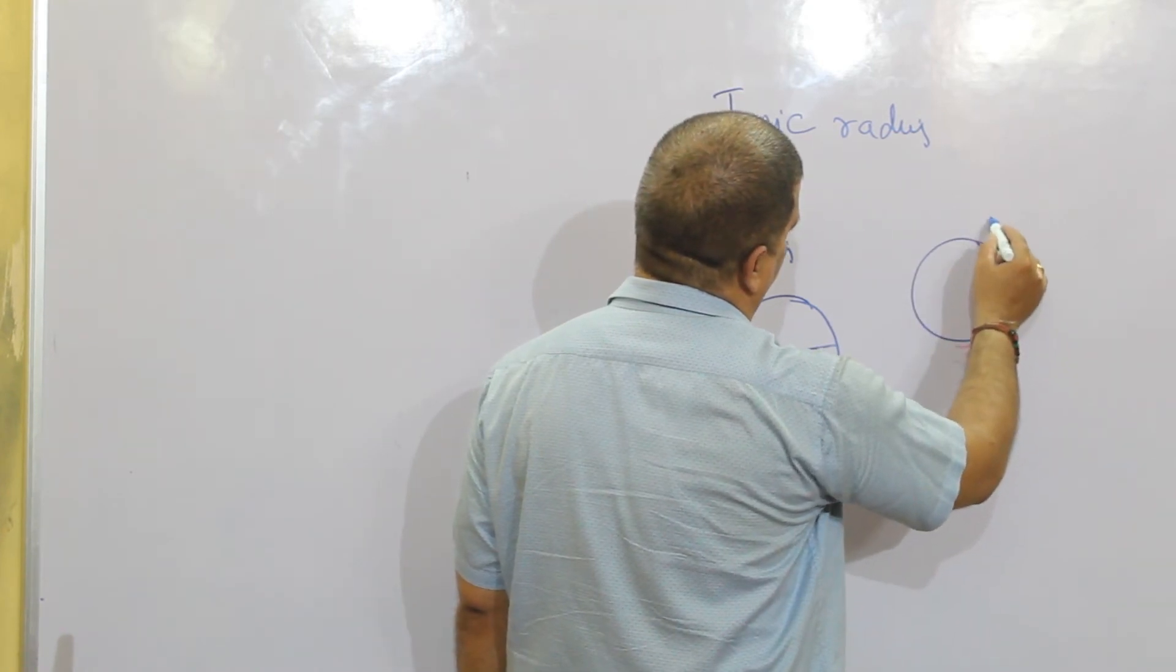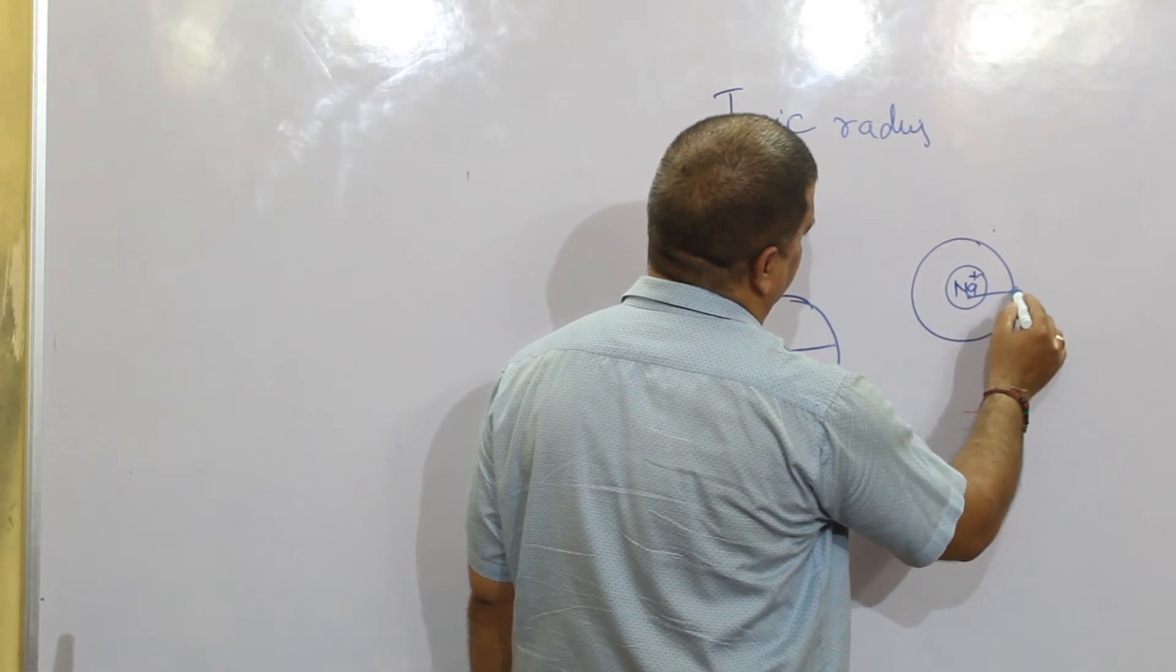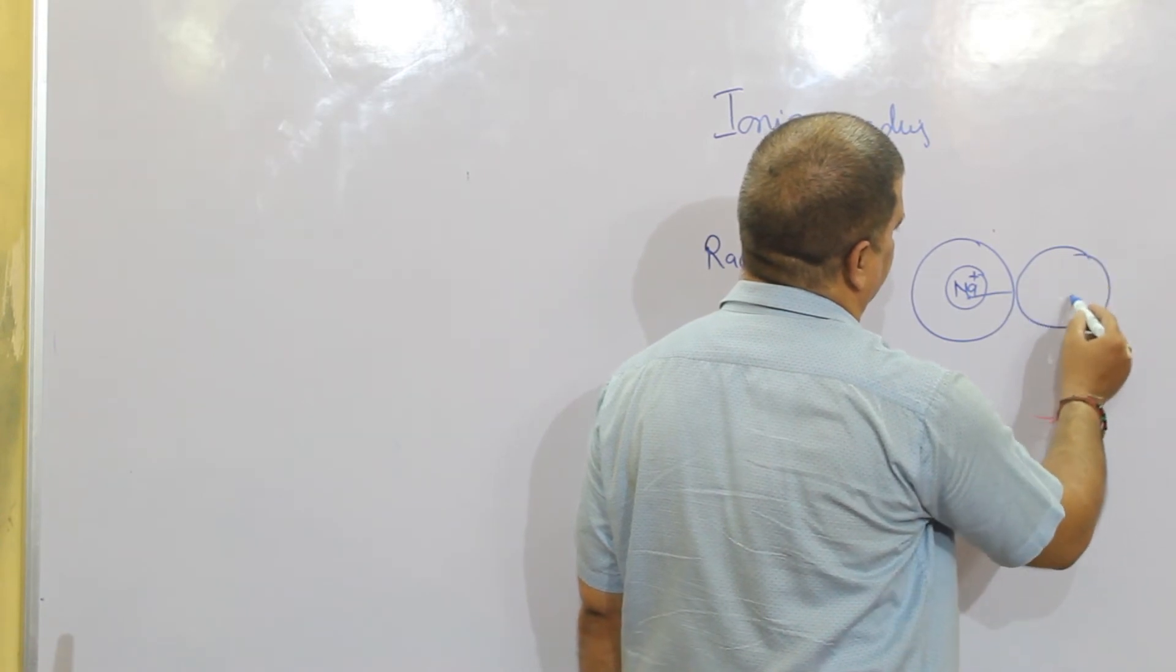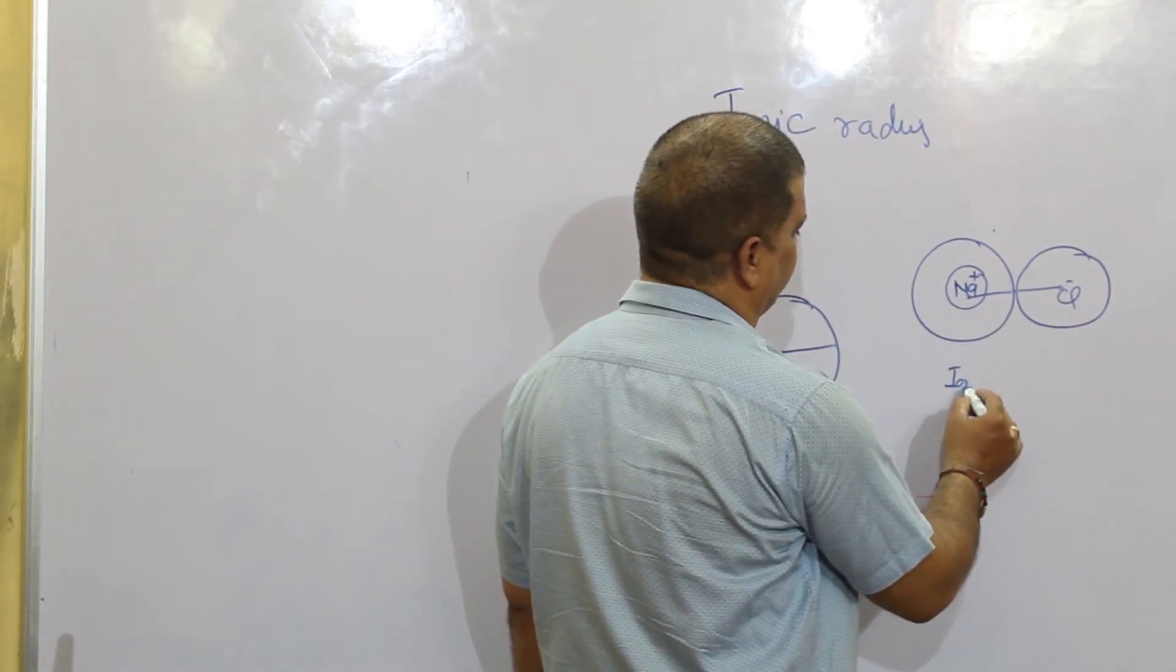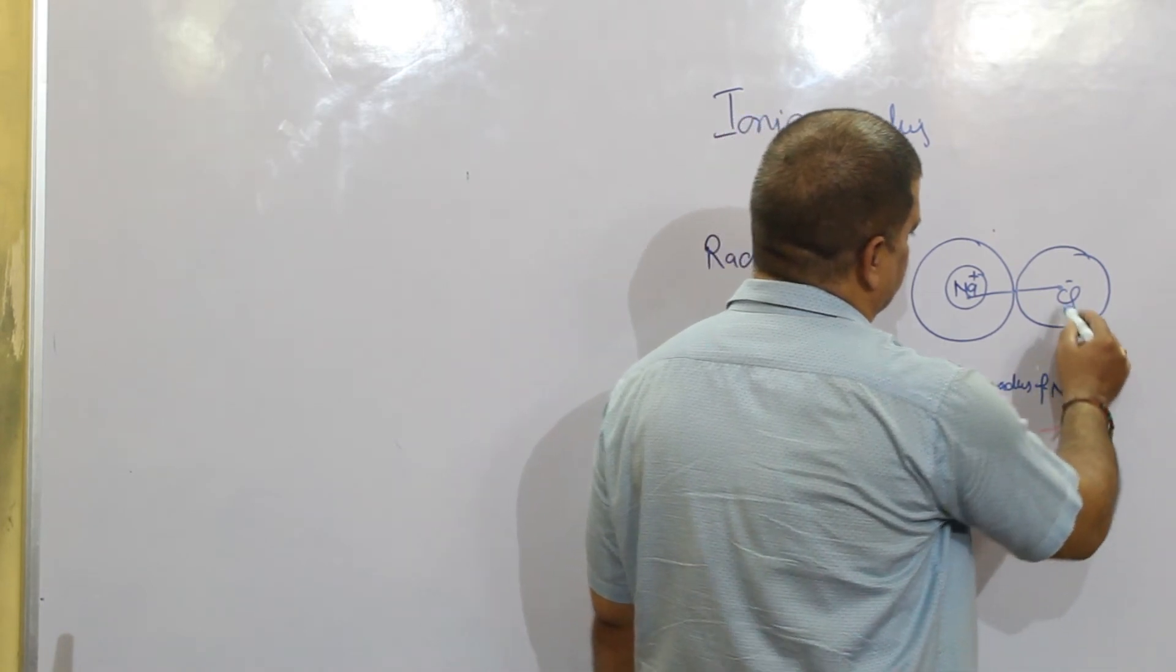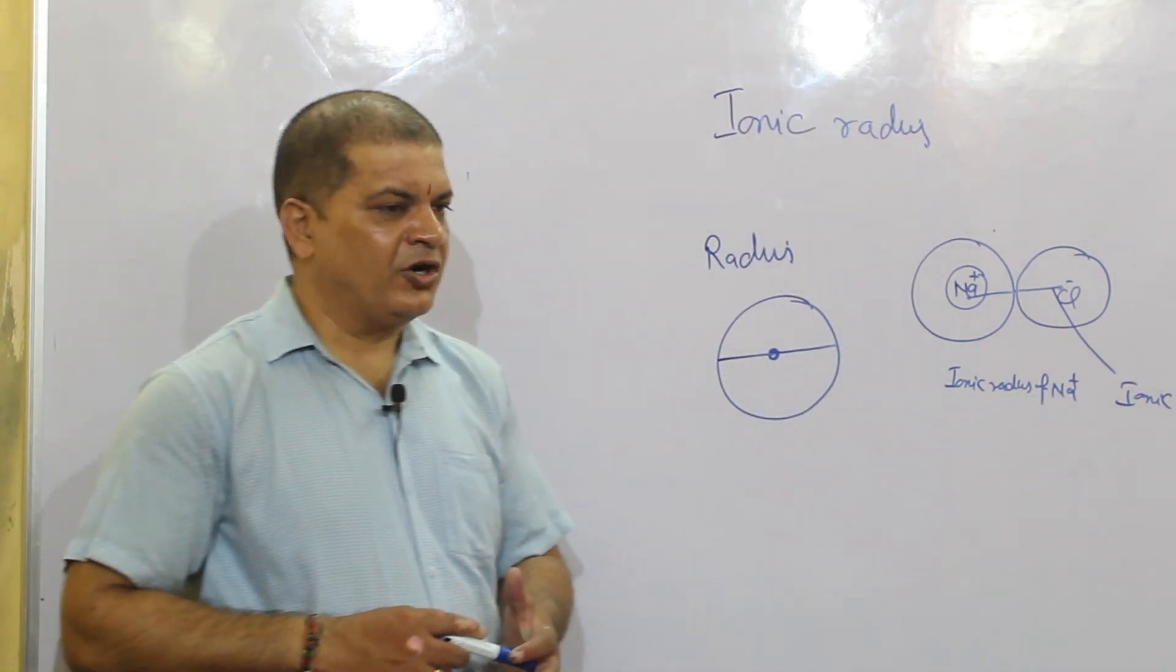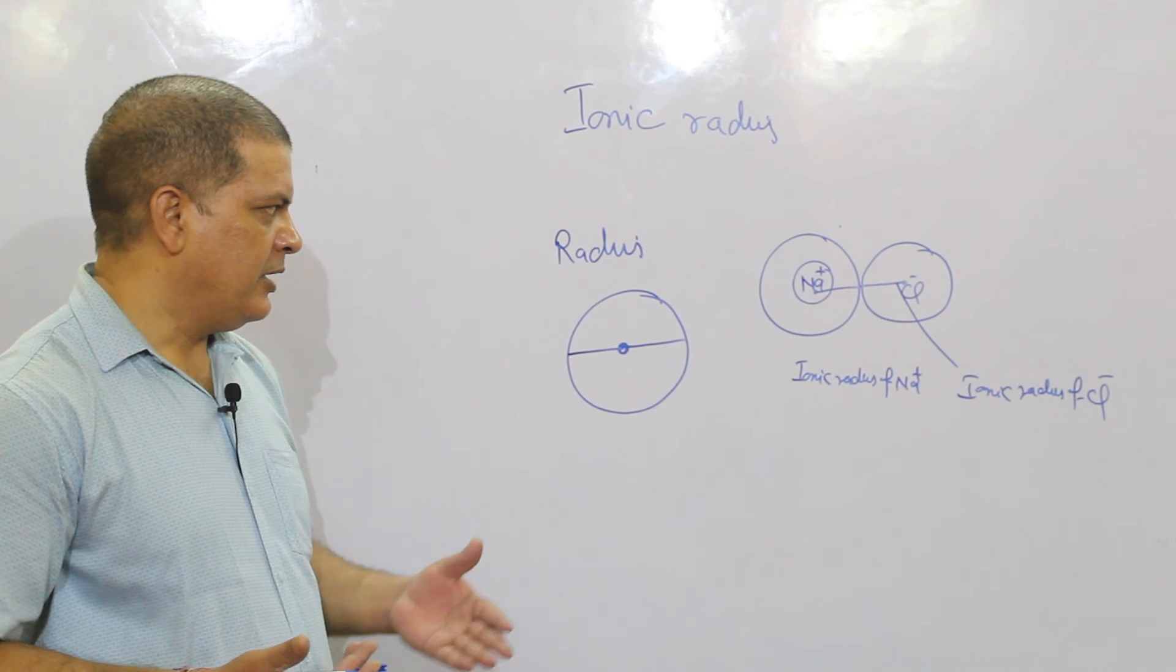This is a sodium ion. This is called ionic radius. The ionic radius has a different magnitude.